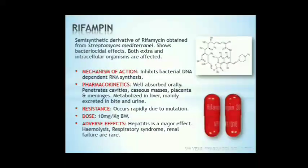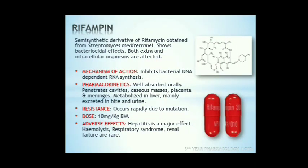Next is rifampin. It is a semi-synthetic derivative of rifamycin obtained from Streptomyces mediterranei. It has bactericidal action against Mycobacterium tuberculosis, Mycobacterium paratuberculosis, and other subpopulations of tuberculosis bacilli. Both extra- and intracellular organisms are affected. The mechanism of action is inhibition of bacterial DNA-dependent RNA synthesis. It is well-absorbed orally and penetrates cavities, caseous masses, placenta, meninges, etc. It is metabolized in the liver and mainly excreted in bile and urine.